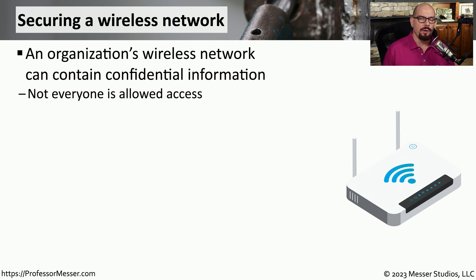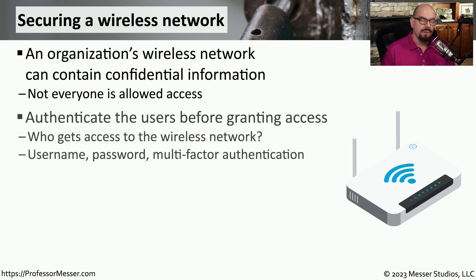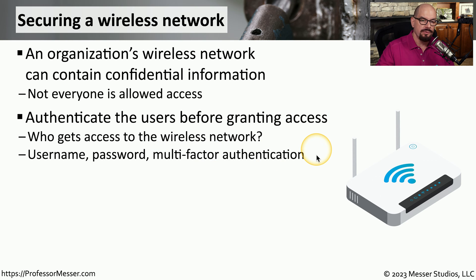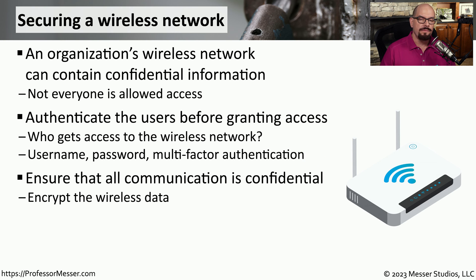An obvious security concern regarding wireless networks is that everything is being sent over the air. This means a nearby attacker could also listen in to this communication, and if anything is being sent in the clear, they'd be able to see everything that's being transferred. We also have the challenge of only allowing authorized users to access the wireless network, and usually we'll ask someone for a username, password, or some other type of authentication when they are first connecting. The default configuration for most private wireless networks would be to encrypt all traffic going across this network.